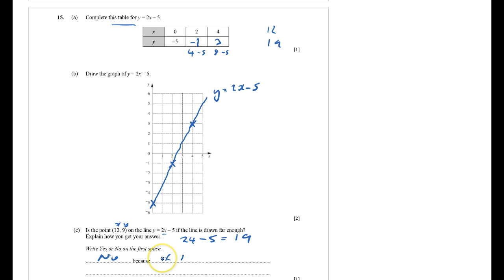And we could say if x equals 12, then y equals 24 minus 5, which equals 19, not 9 as they said it was. So it's not. That's 15 done.